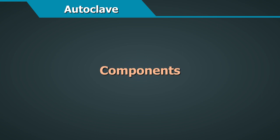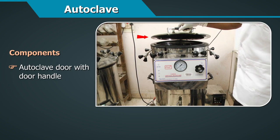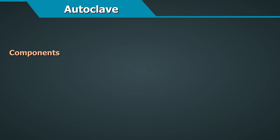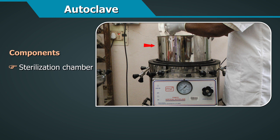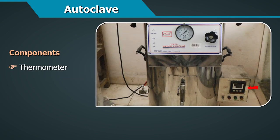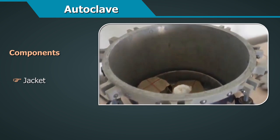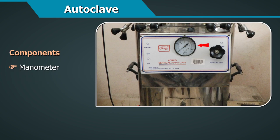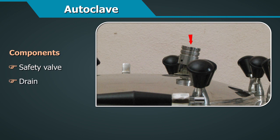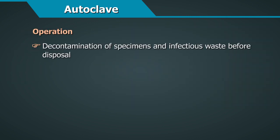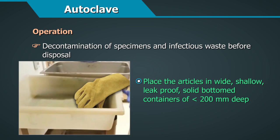The main components of large autoclaves used in hospitals include the autoclave door and lid, sterilization chamber, thermometer, jacket, drain, chamber manometer, and safety valve.